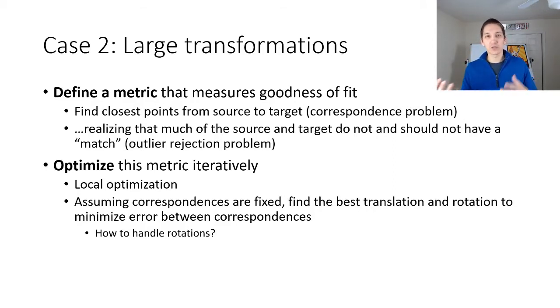Now in the case of large transformations which are more characteristic of object pose recognition we're going to define a metric that measures the goodness of fit between the source and the target geometries. This is going to require solving what's known as a correspondence problem. We don't know exactly which point in the source matches the target and actually we need to realize that much of the source and target geometries do not have a match. This is because the scene is going to have a lot more background information and may have occluders that are not the target object and so we have to be very careful at rejecting outliers. Once we've defined such a metric though we will then optimize this metric iteratively. We'll use local optimization techniques and we'll assume that the correspondences are fixed after determining those in the first step and we'll just minimize the errors between those correspondences. Something that I haven't spoken in much detail about is how to handle the rotation components of these transformations and we'll talk about this in more detail in just a few slides.